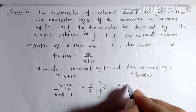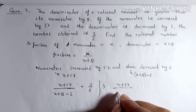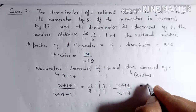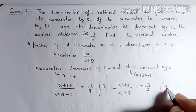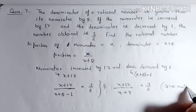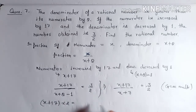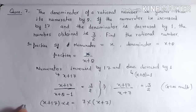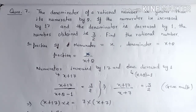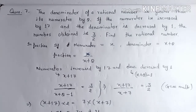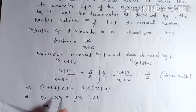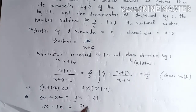Simplify the denominator: x plus eight minus one becomes x plus seven. So x plus 17 upon x plus seven equals three upon two. Now cross multiply: two into x plus 17 gives two x plus 34, equal to three into x plus seven, which gives three x plus 21. Transposing: two x minus three x equals twenty-one minus thirty-four.